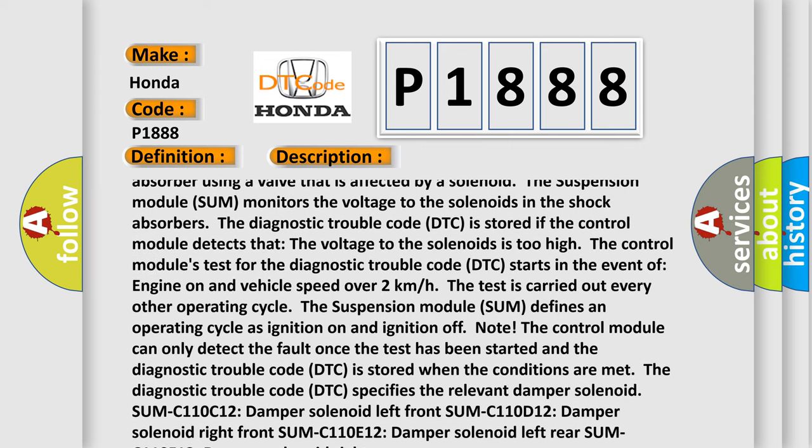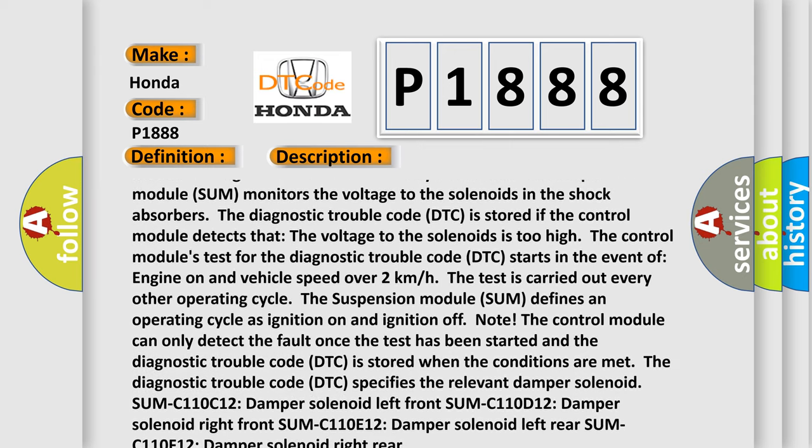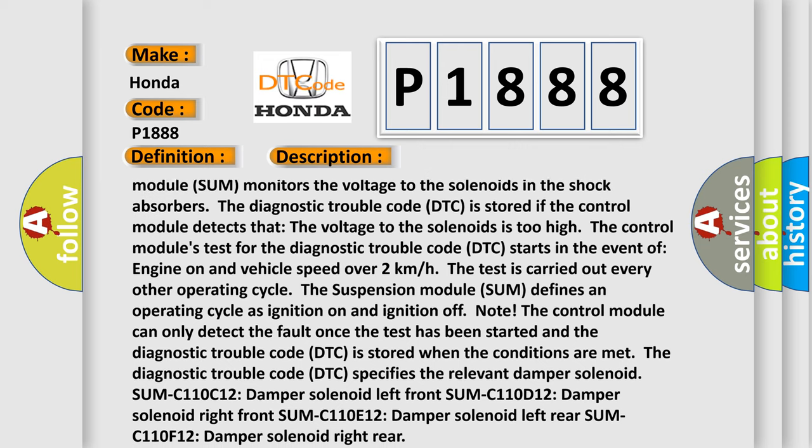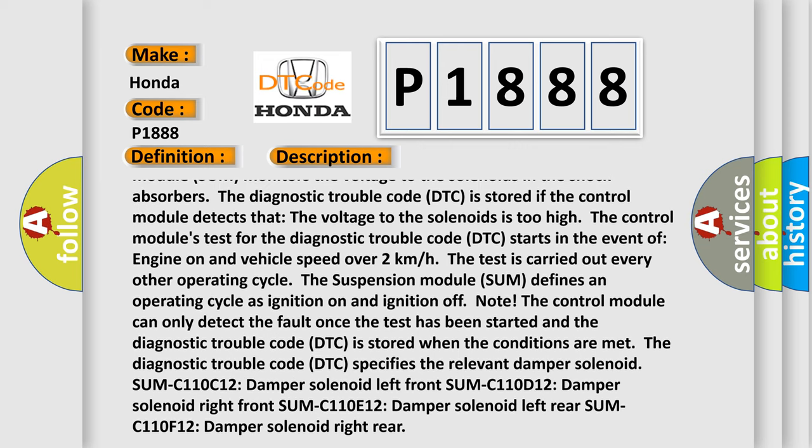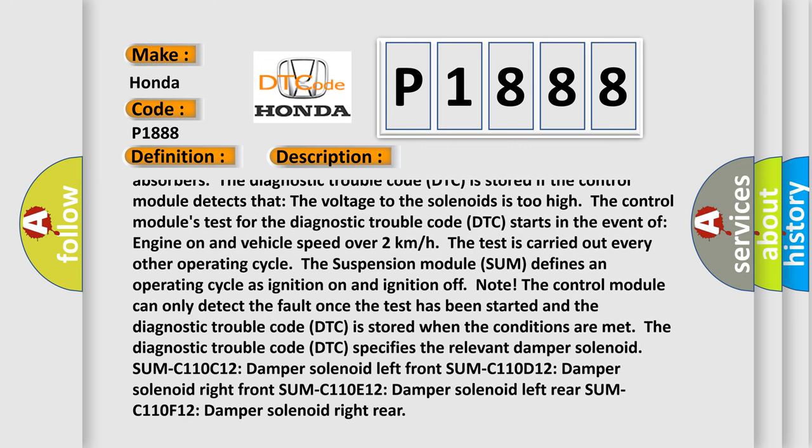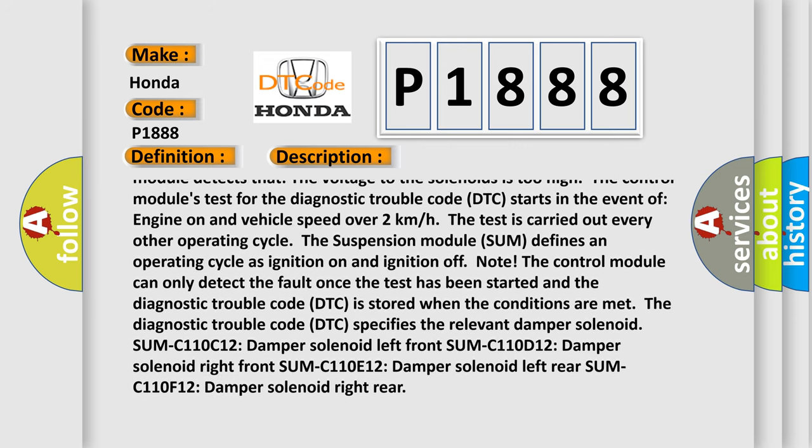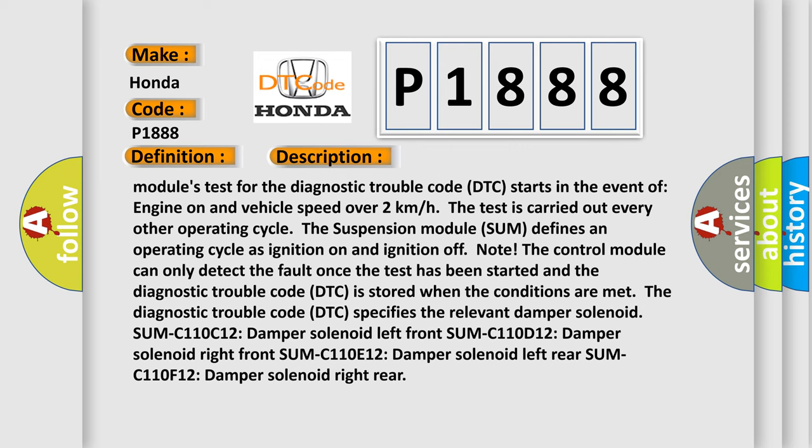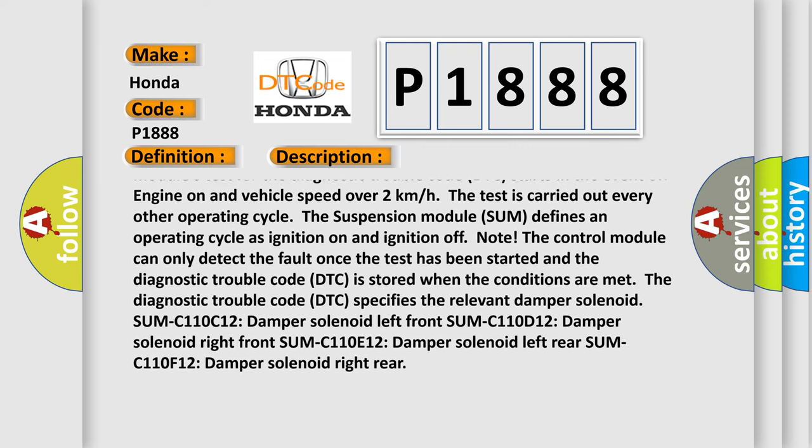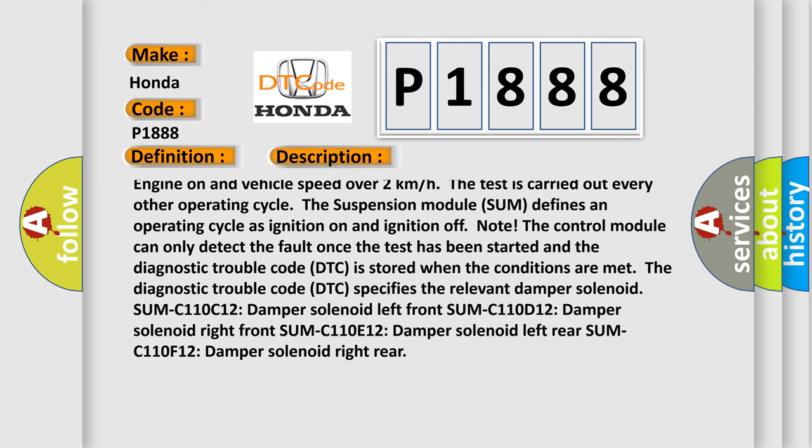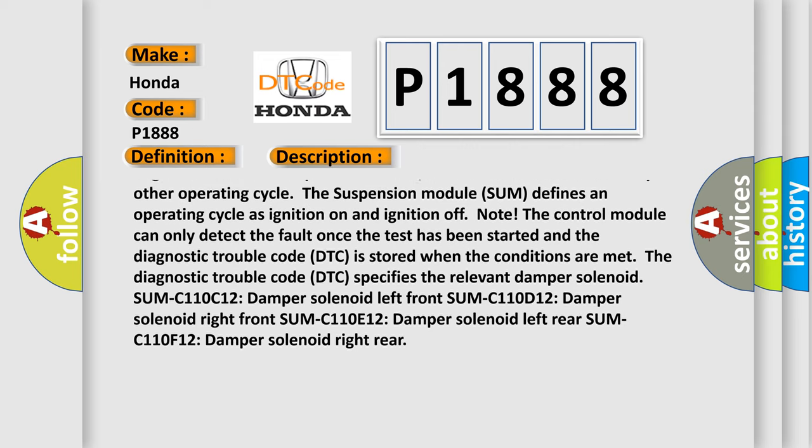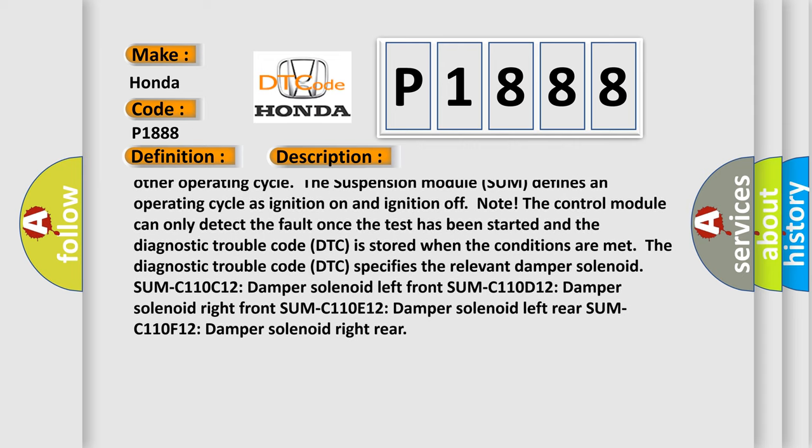The control module's test for the diagnostic trouble code DTC starts in the event of engine on and vehicle speed over 2 km/h. The test is carried out every other operating cycle. The suspension module SUM defines an operating cycle as ignition on and ignition off. Note: The control module can only detect the fault once the test has been started and the diagnostic trouble code DTC is stored when the conditions are met.